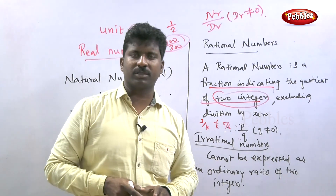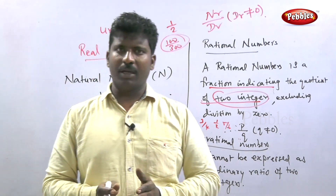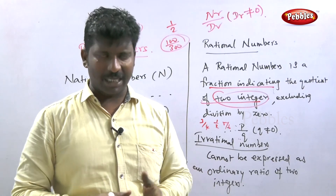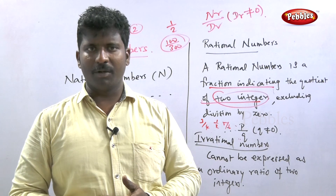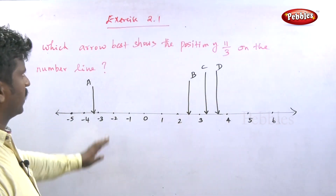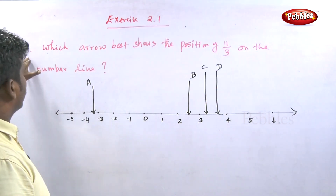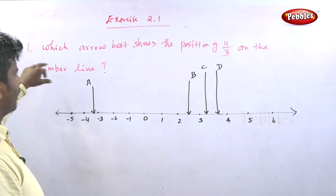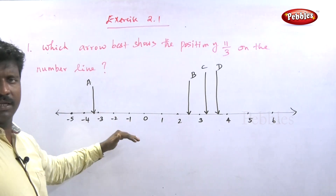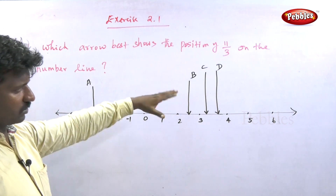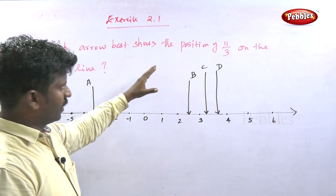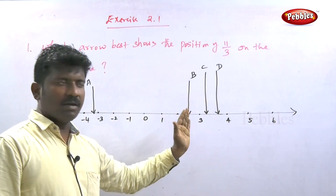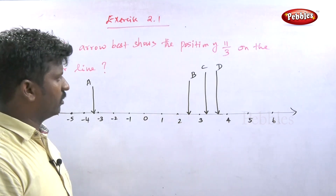Now we look at problems on rational numbers — finding three rational numbers or more between two given rational numbers. Exercise 2.1, first question: which arrow best shows the position of 11 by 3 on the number line? There are four arrow marks — A, B, C, D — and we need to find which is the correct position for 11 by 3.